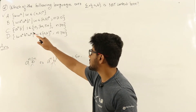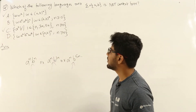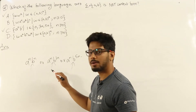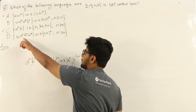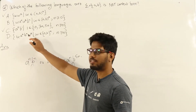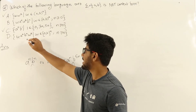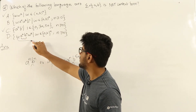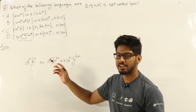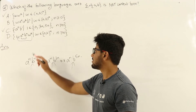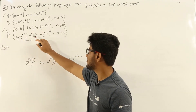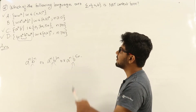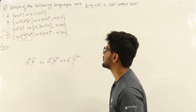Option D: w a^n b^n w-reverse. This is also context-free. We push the string w to the stack initially, then push n a's. When we see b's, we pop each a one by one to match with b's, so the a^n and b^n parts match. After that, the string w remains in the stack, which we match with w-reverse by verifying each input alphabet matches the top of the stack. So we can design a non-deterministic pushdown automata for this as well.